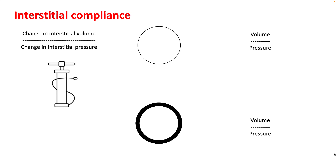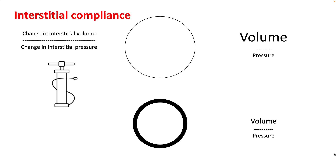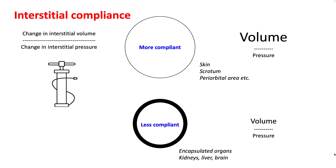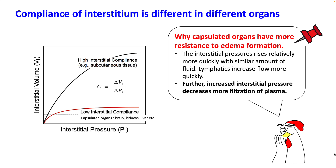The next concept is interstitial compliance — the change in interstitial volume divided by change in interstitial pressure. If the same pressure produces more volume increase, it is a highly compliant area, as seen in skin, scrotum, and periorbital area. Less compliant areas expand less, and these are commonly encapsulated organs such as kidneys, liver, or brain. Encapsulated organs have more resistance to edema formation because interstitial pressure rises more rapidly, increasing lymphatic flow and decreasing the filtration gradient. Unfortunately, these same organs are subject to compartment syndrome, because the same volume generates much higher interstitial pressure.